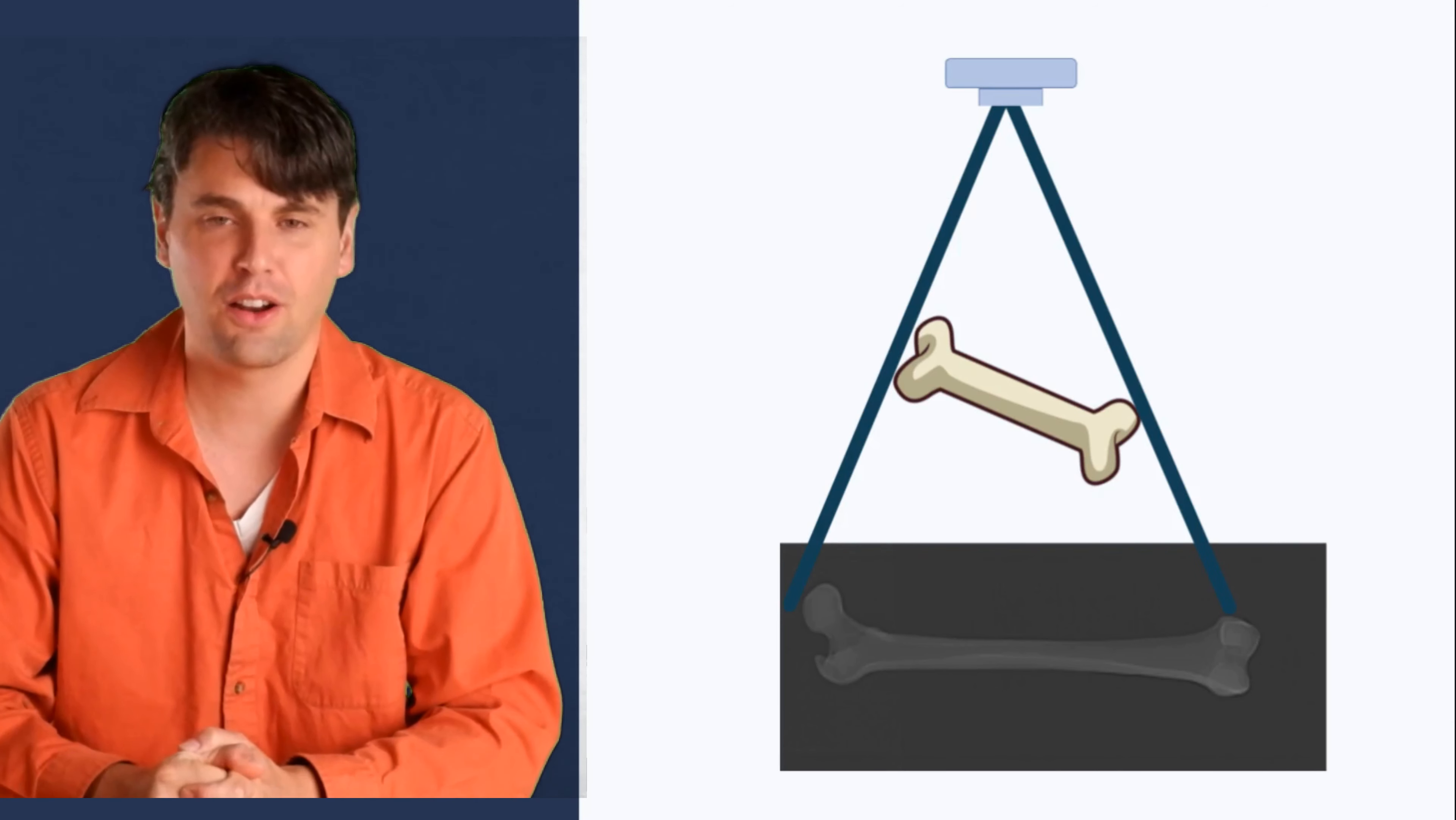As you'll notice, we talked a lot about magnification because it really affects foreshortening and elongation. If you haven't seen our video about magnification, check that one out next.